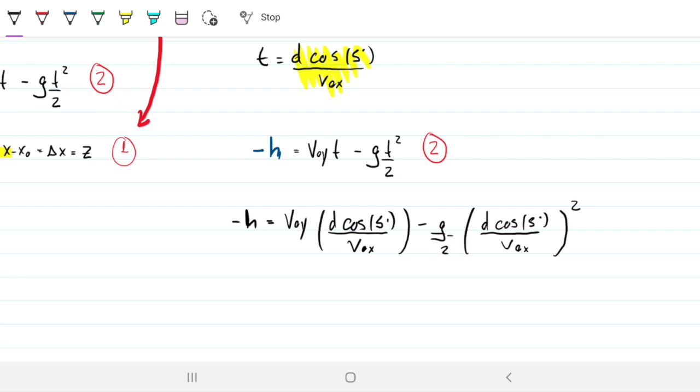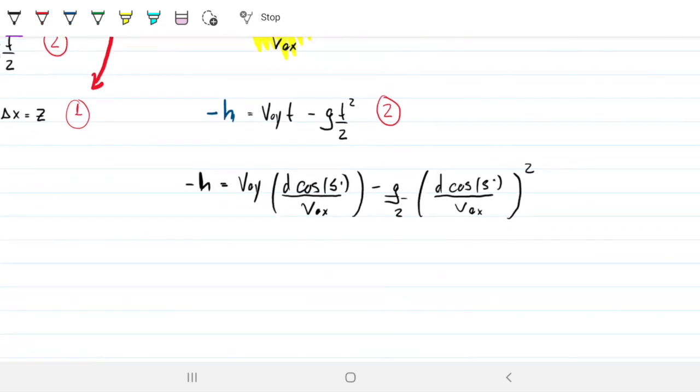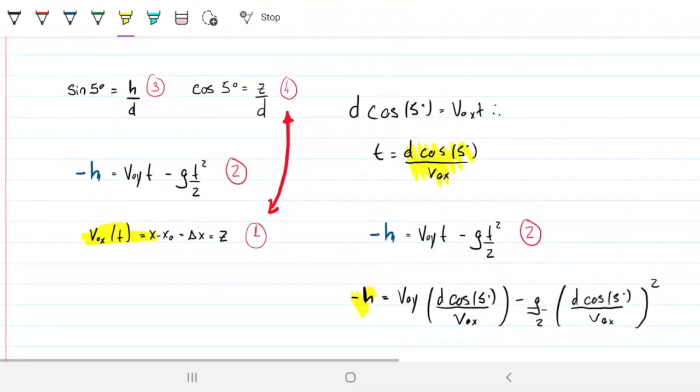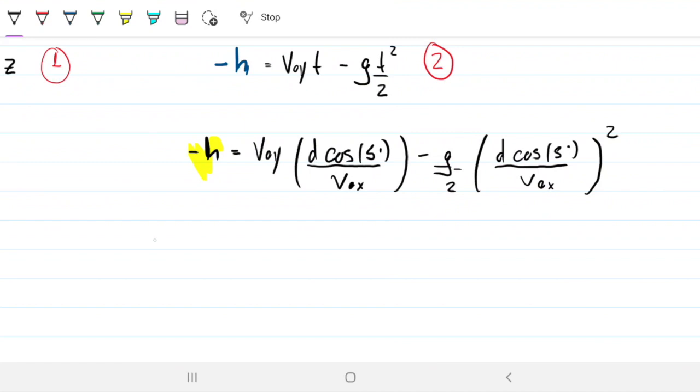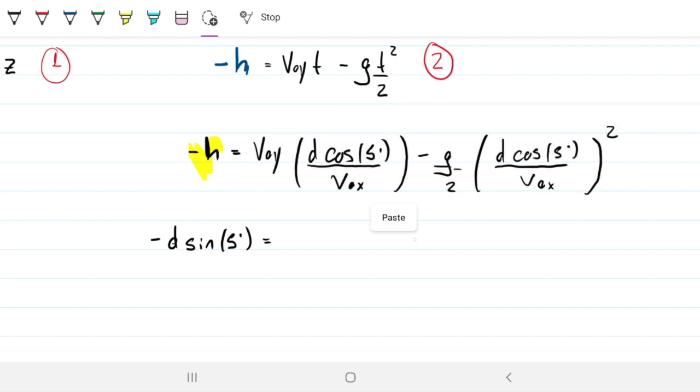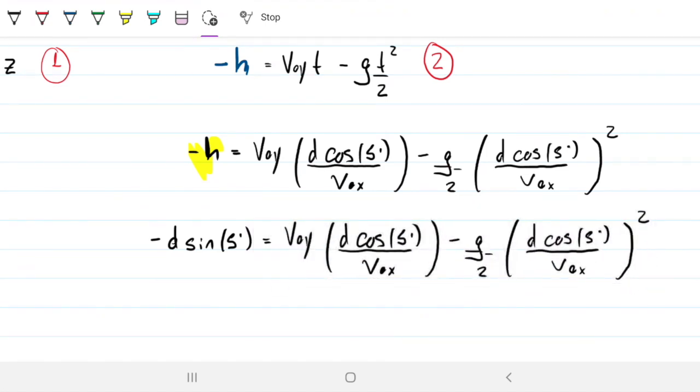So I can rearrange this because after all, I want to solve for D. So I can rearrange this in a couple of different ways. And the other thing that we can do is wherever we have H, we can sub that H in for D times sine of five. So where we have H on the left-hand side, you can sub that by D sine of five. So this becomes negative D sine of five equals the previous expression.